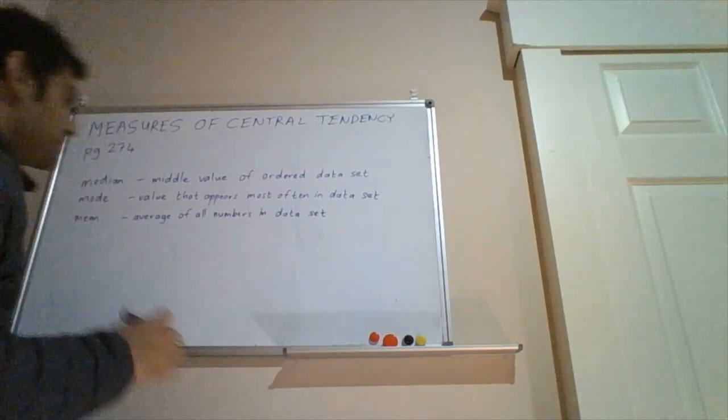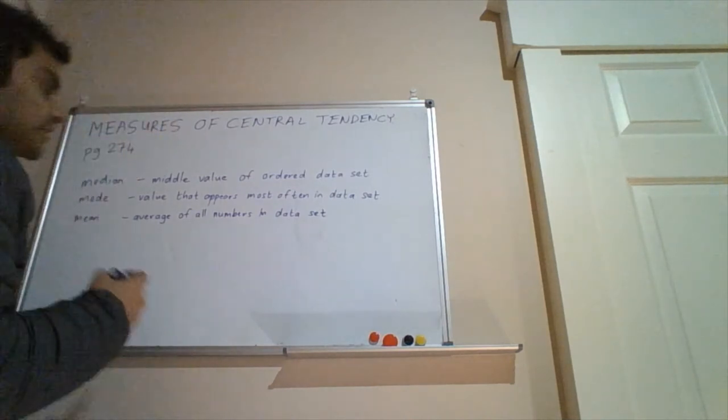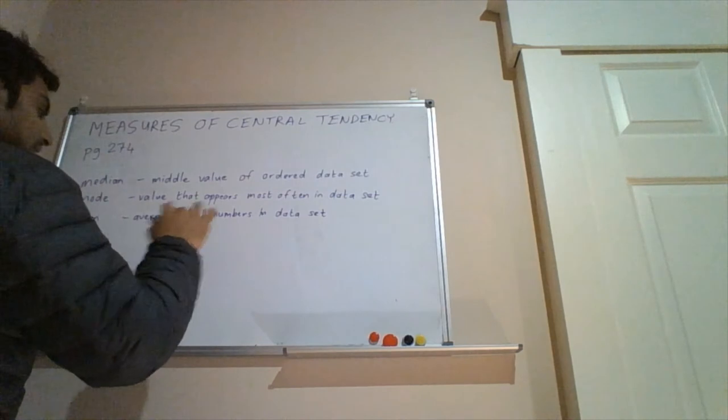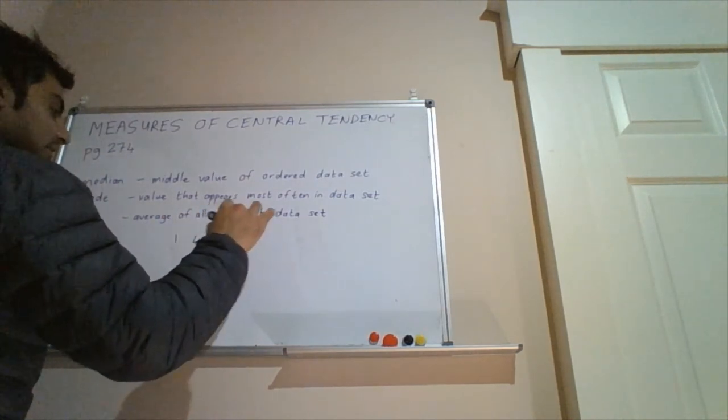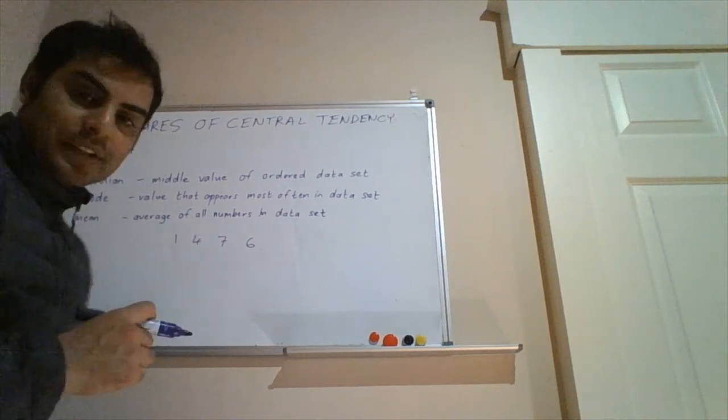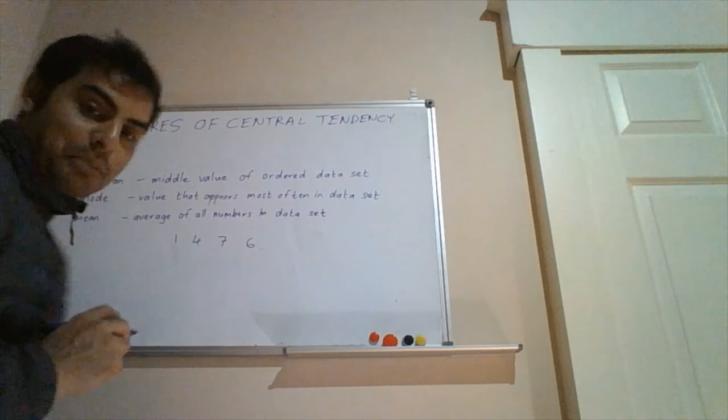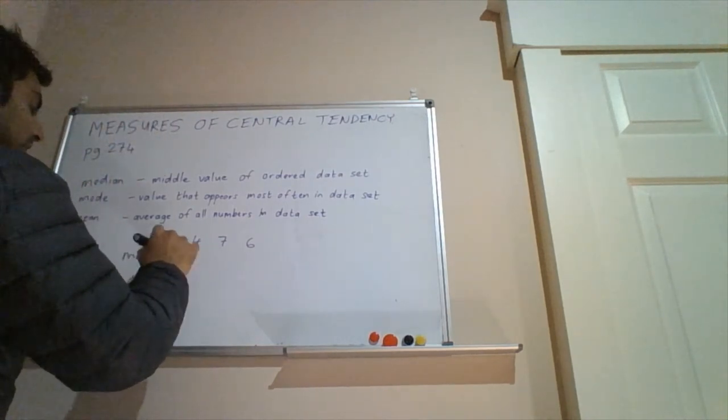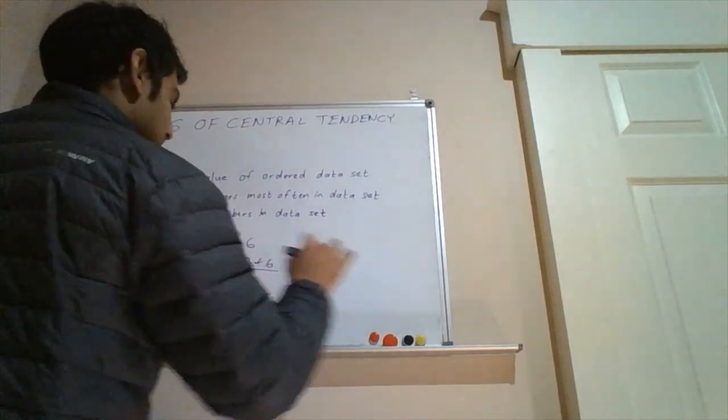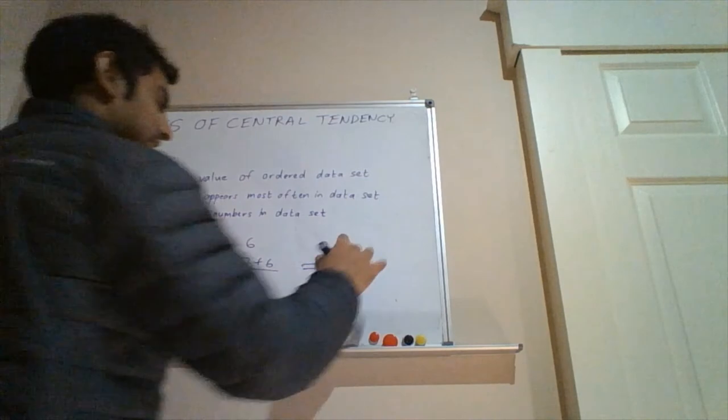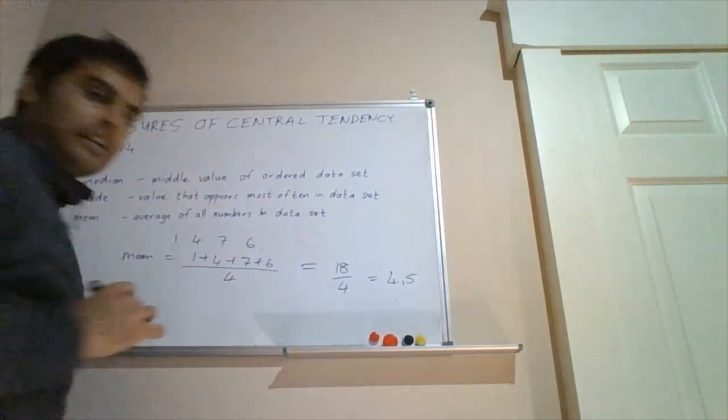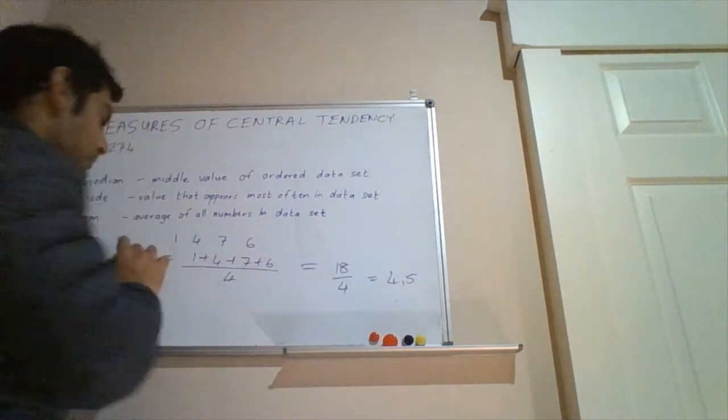Lastly, we have the mean, which is the average of all numbers in the data set. So this is easier expressed with an example than by describing it. So let's think of the data set 1, 4, 7, and 6. So to find the mean, we add all these numbers together and divide it by the number of numbers. So in this case, we are dividing by 4. So we work out our mean as 1 plus 4 plus 7 plus 6, and we divide it by the number of values in the data set. So 1 plus 4 is 5, plus 7 is 12, plus 6 is 18, divided by 4 equals 4 and a half. Okay, so notice we can get fractions when we're working out the mean.